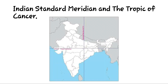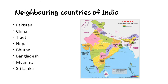In the second map, you can see the Indian Standard Meridian and the Tropic of Cancer marked very clearly. The neighbouring countries of India — Pakistan, China, Tibet, Nepal, Bhutan, Bangladesh, Myanmar and Sri Lanka — are also indicated. Try to locate the places and learn them thoroughly.